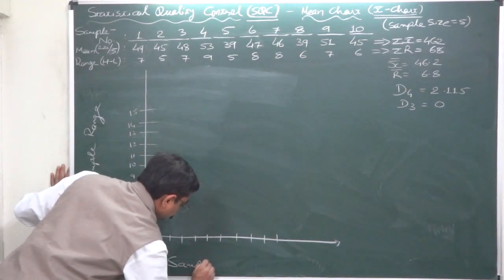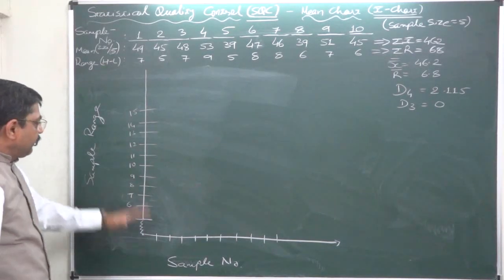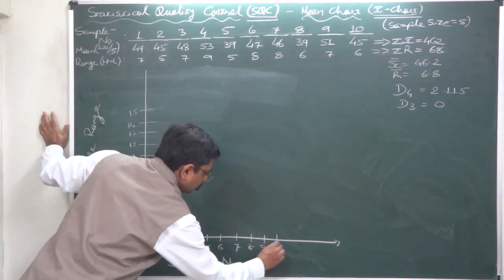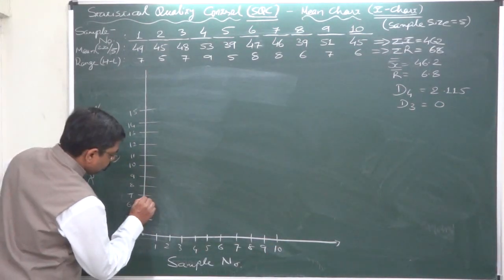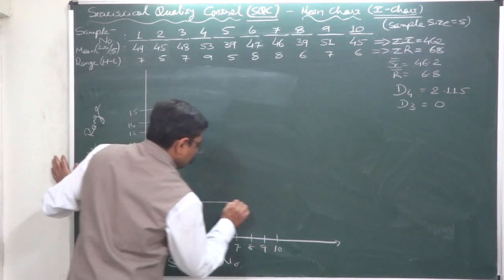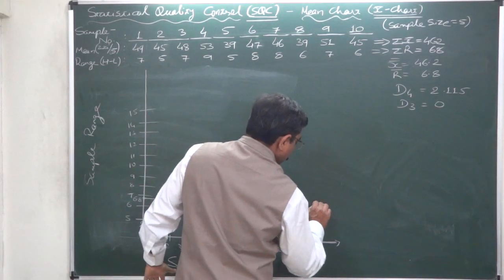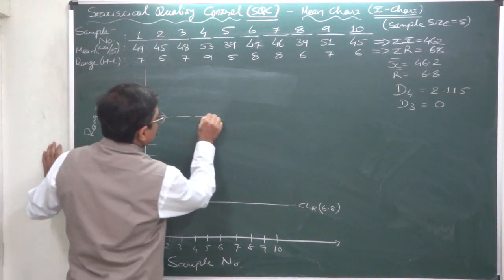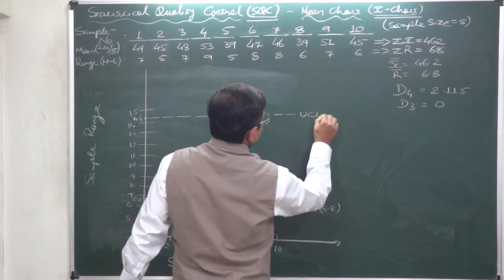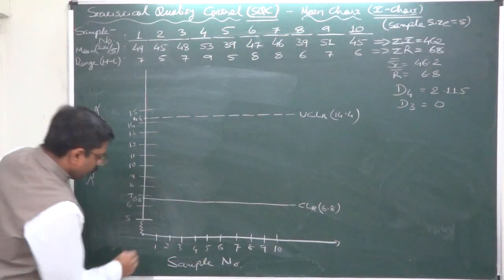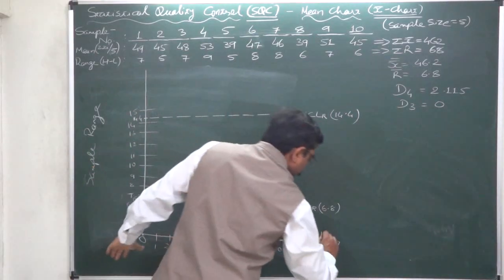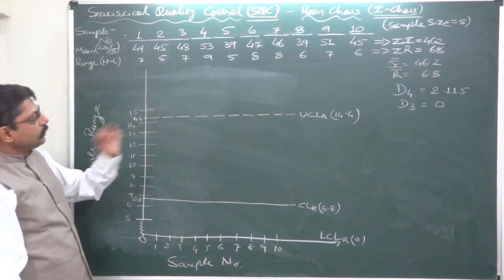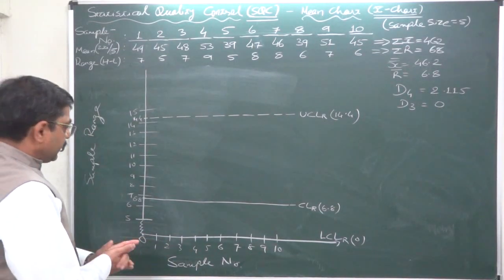Here it is not something like dependent variable and independent variable, no, these are just two relevant information, not variables. First of all, central line is 6.8, somewhere here. Central line is always a continuous line. Upper control limit is 14.4, it may be here somewhere. And lower control limit is 0. Zero is nothing - the horizontal axis itself becomes the lower control limit.